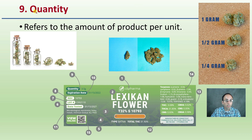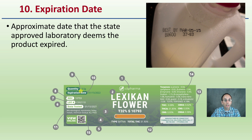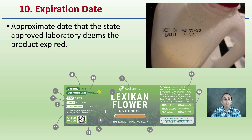Moving on to number nine, we have the quantity — the amount of product per unit. In this case, we're looking at 3.5 grams. Going around below, number ten is the expiration date — the approximate date that the state-approved laboratory deems the product expired. In this representative sample, the product was tested January 15, 2021, and the expiration date is listed as January 15, 2022 — about a year. Expiration dates are also common on products like milk.